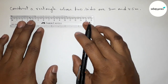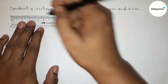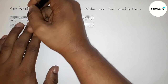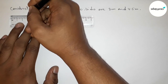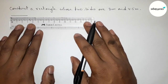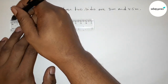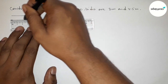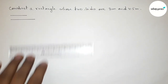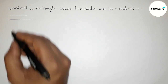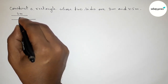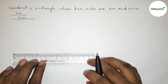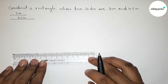First, drawing the two given sides. First, a 3 centimeter line segment — this is the 3 centimeter line segment. Then drawing another 4.5 centimeter line segment. So this one is 3 centimeters and this one is 4.5 centimeters.